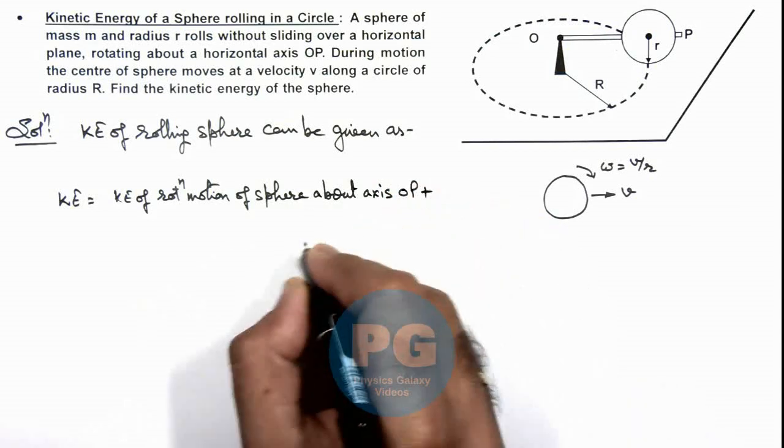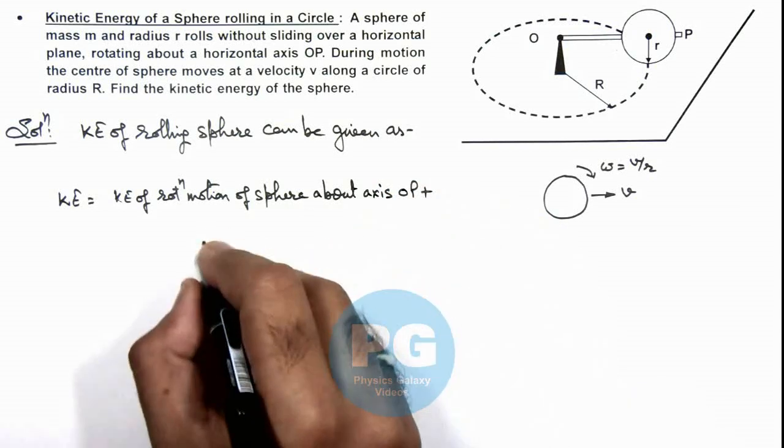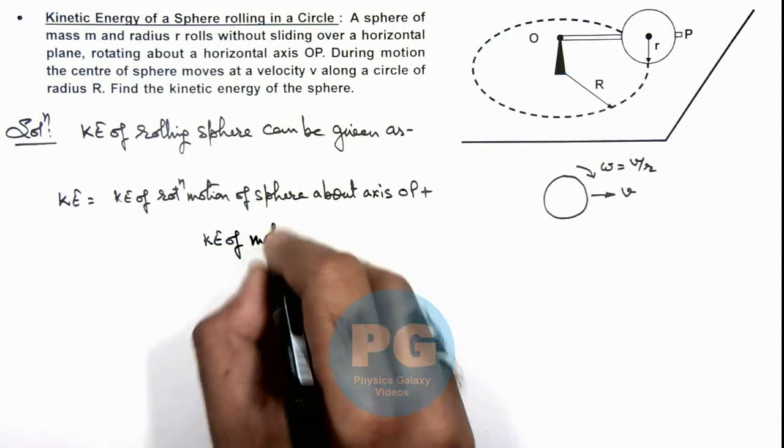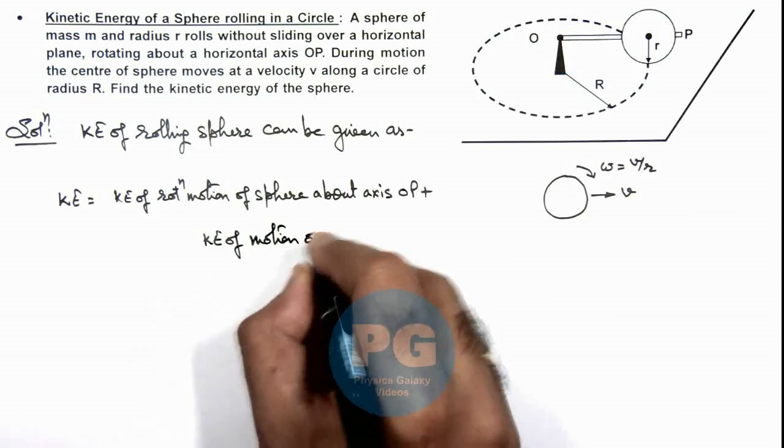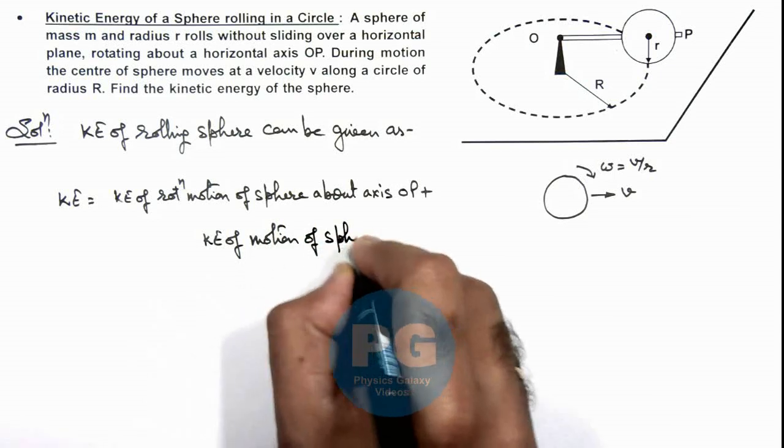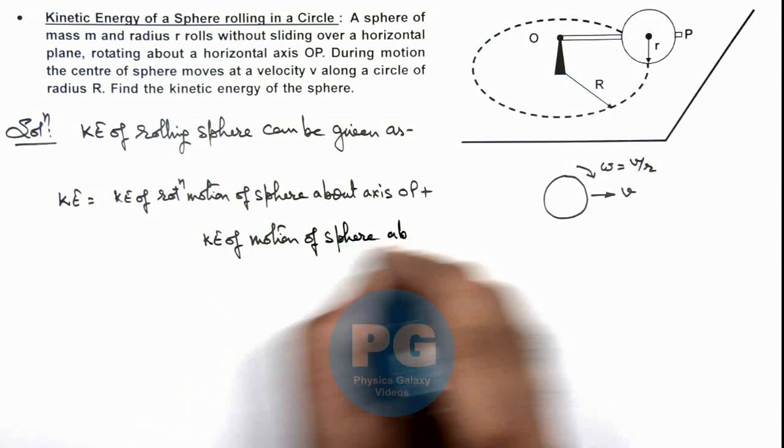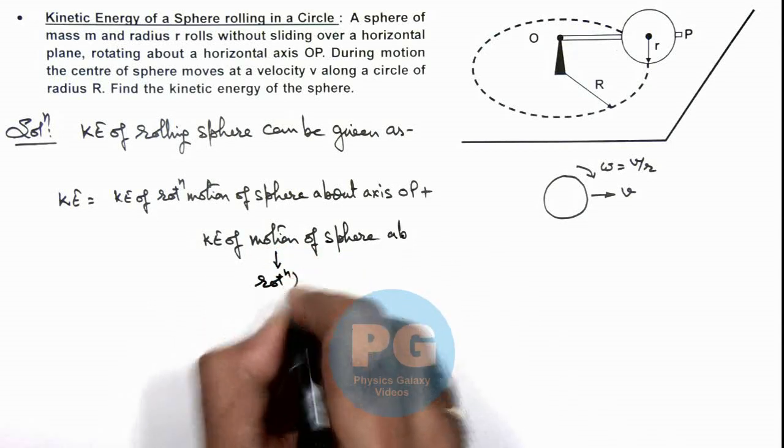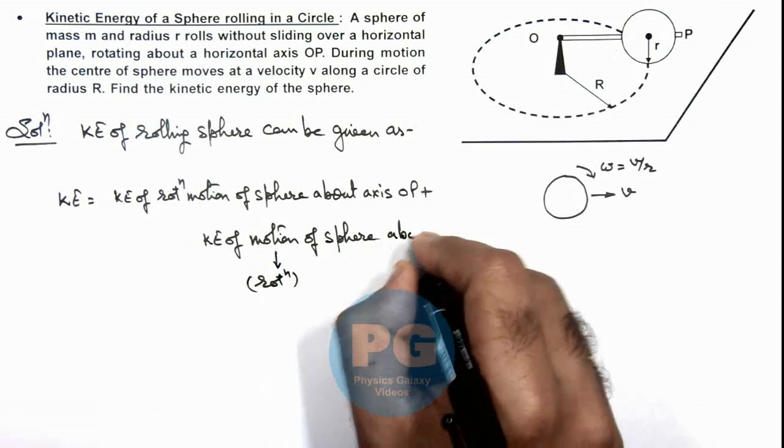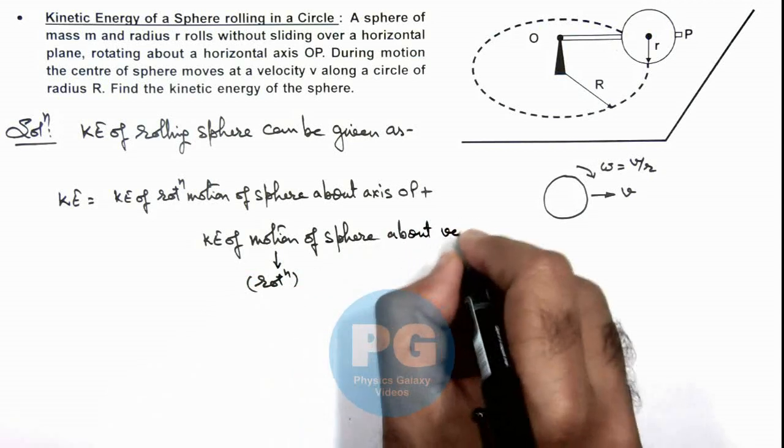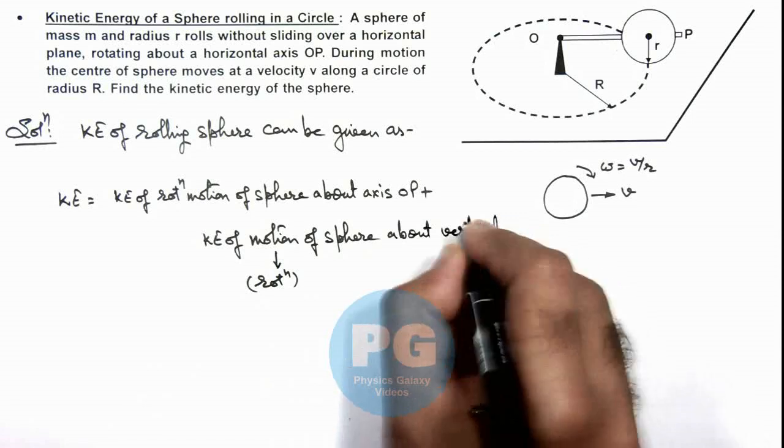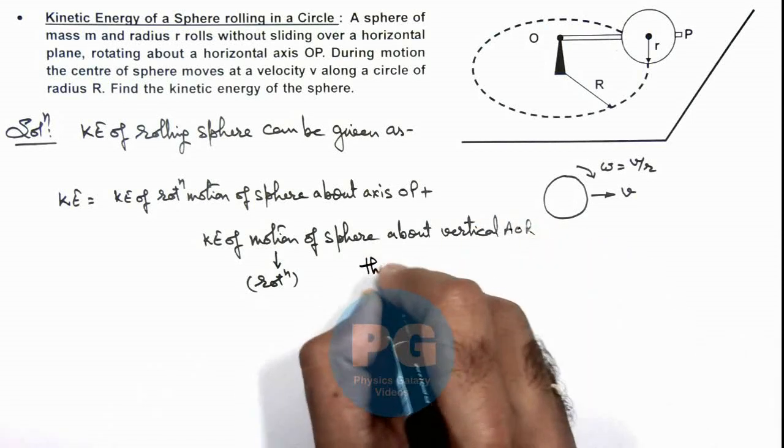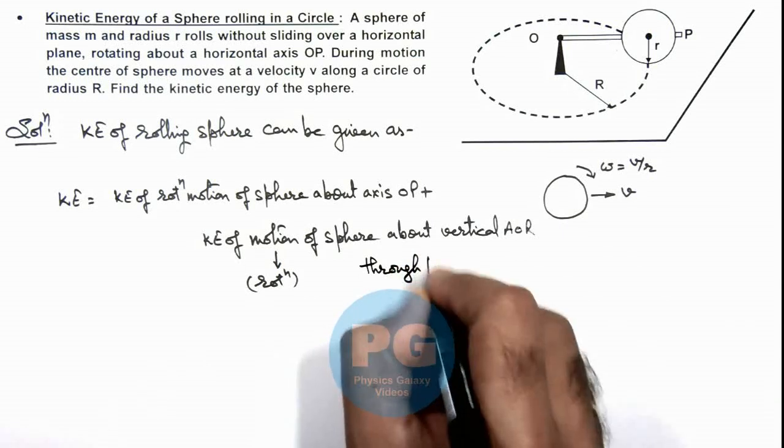Another term here we can write - this is also rotational motion of sphere about vertical axis of rotation through point O.